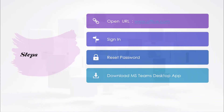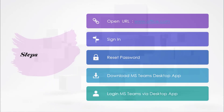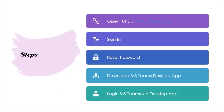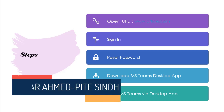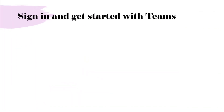After signing in, if you have a desktop application on your laptop or desktop computer, you can download the Teams desktop application. Once downloaded, you can easily login through your licensed ID provided by the organization. We will also see practically how to do this — remember these steps.